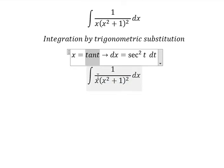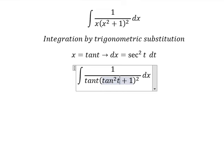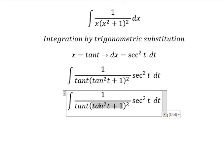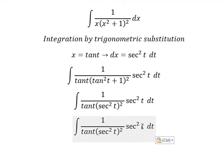So I will put this one here and here. dx we change by secant squared t dt. This one we change to secant of t squared. Now we need to simplify all numerator and denominator.